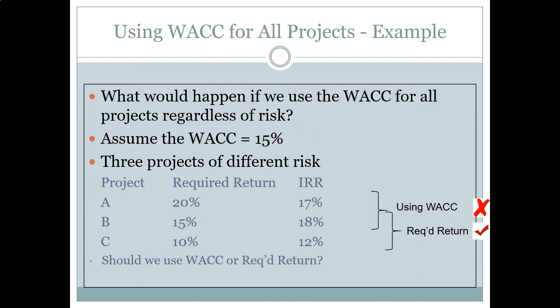The IRR for A is 17%, which is higher than 15%, so I take it. The IRR for B is 18%, higher than 15%, so I take it. But the IRR for C is lower than 15%, so I reject that project. Hopefully now you can see the issue that WACC raises in scenarios like this.